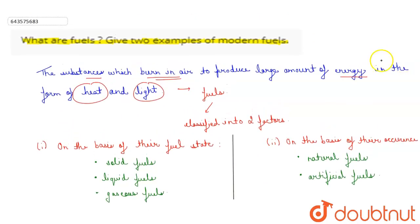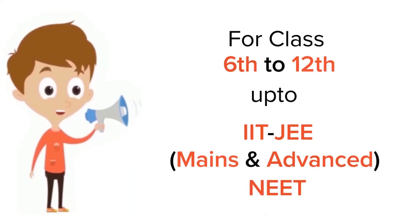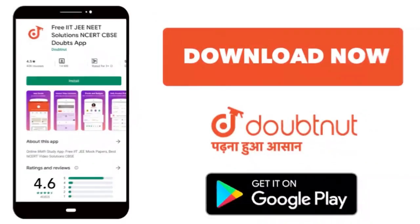So these are the two examples of modern fuels. This is the solution, thank you. For class 6-12, IIT-JEE, and NEET level, trusted by more than 5 crore students, download Doubtnut app today.